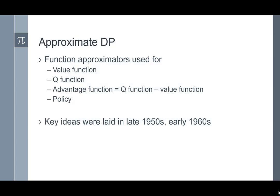Within approximate DP, we have used function approximators for the value function, Q-function, advantage function, and policy. The key ideas were already laid in the late 1950s and early 1960s — this isn't something very novel as far as reinforcement learning is concerned.